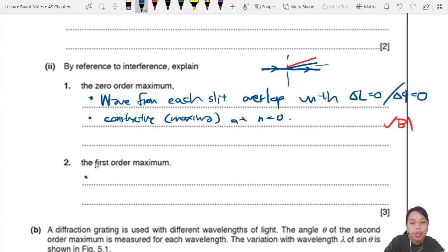Overlap with a path difference d, path difference of lambda - one lambda - or you can say a path difference, a phase difference of 360 degrees.